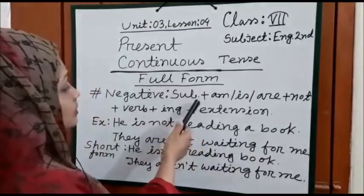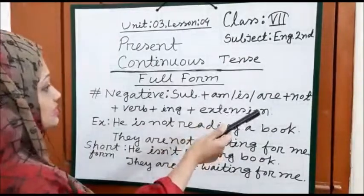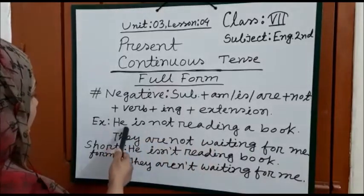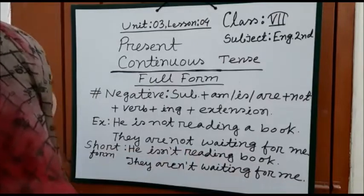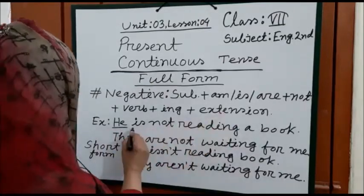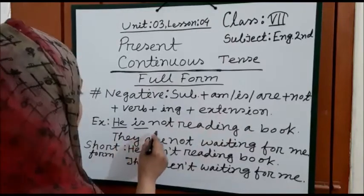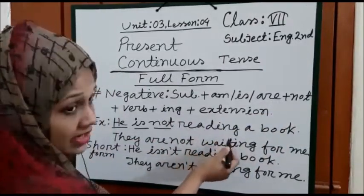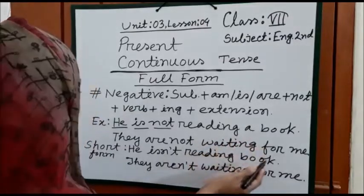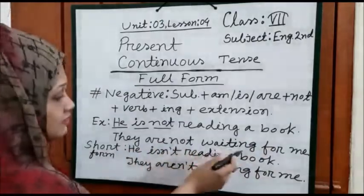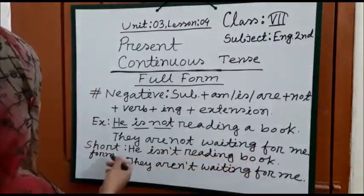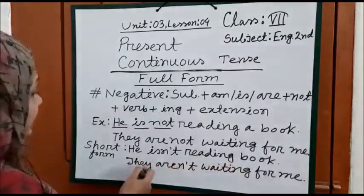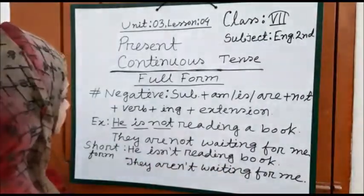In negative form you have to follow this structure: Subject + am/is/are + not + verb + ing + extension. The example will be: He is not reading a book — subject is 'he', we used 'is', added 'not', then 'reading a book'. Another example: They are not waiting for me. In short form: He isn't reading a book. They aren't waiting for me.